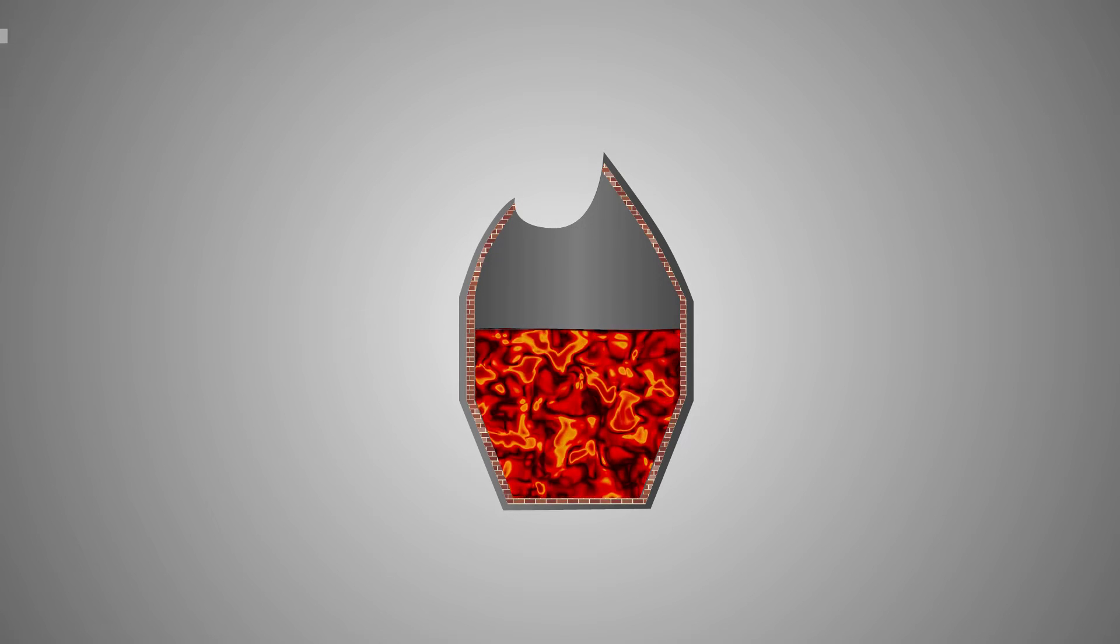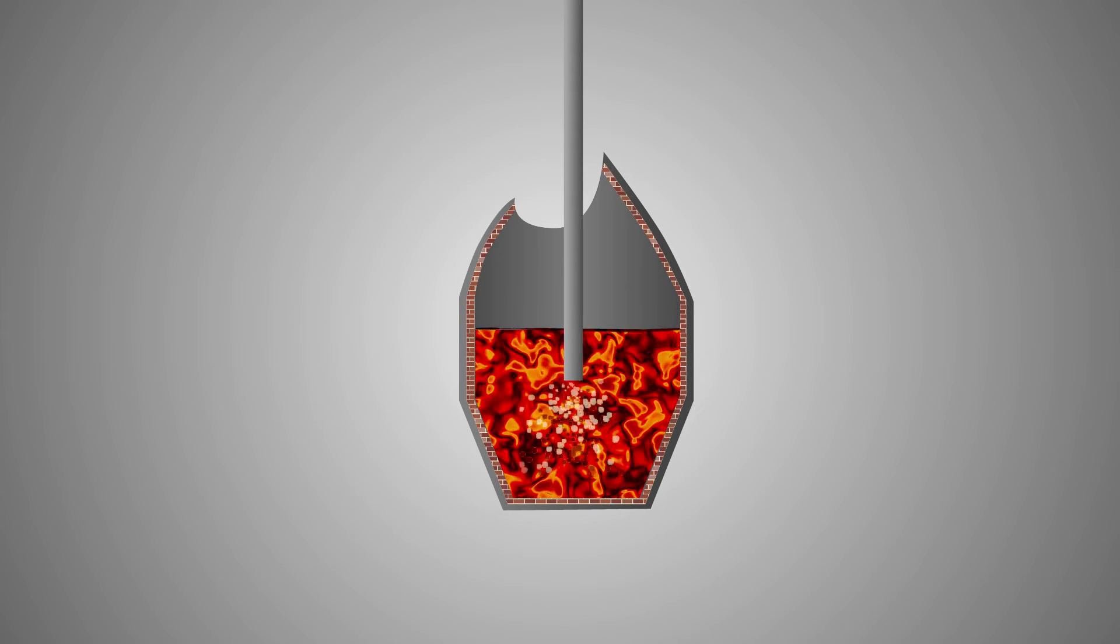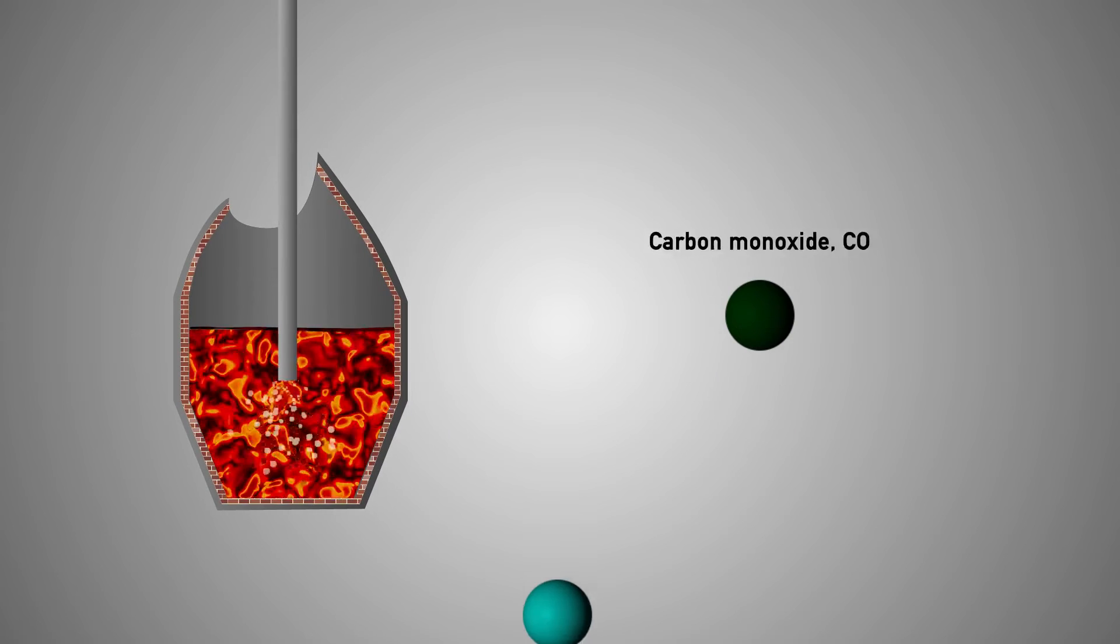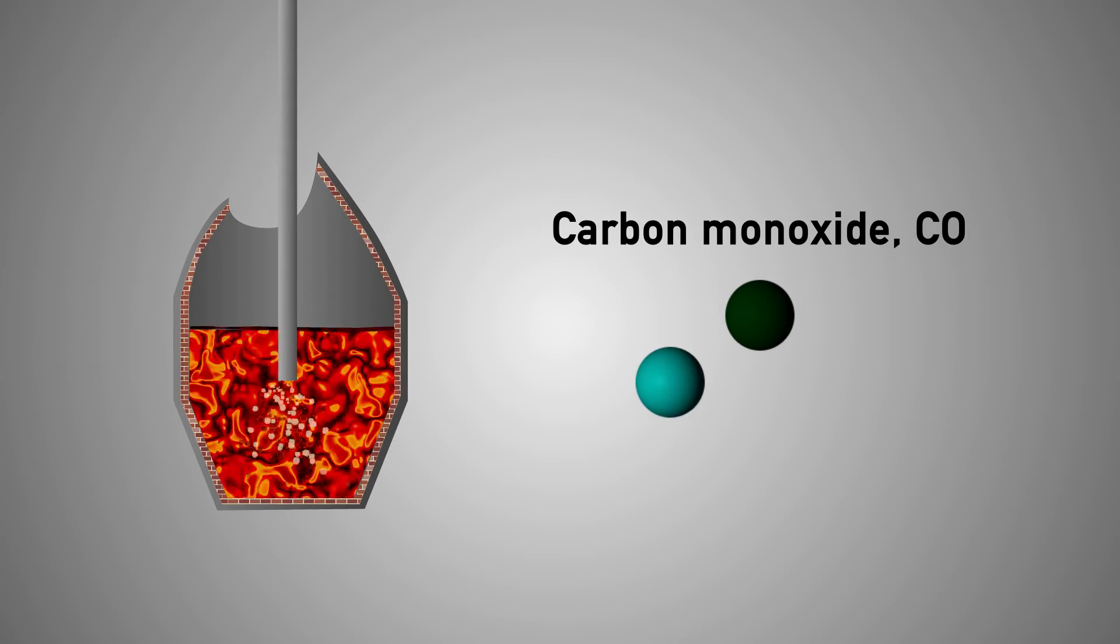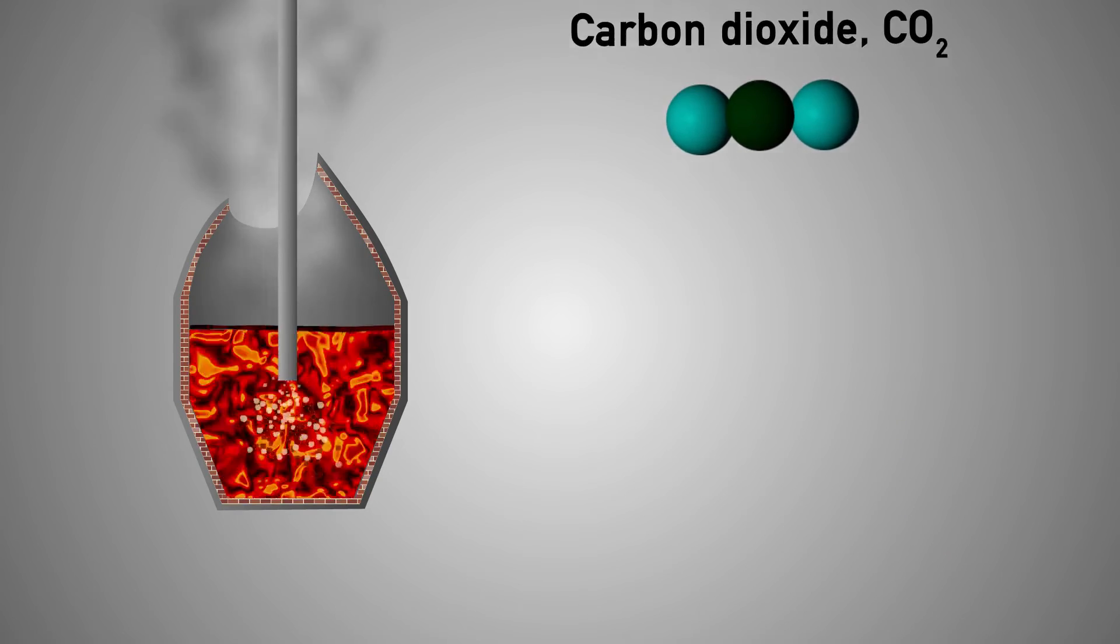Oxygen, together with quicklime (CaO), is injected at high pressure into the molten iron via a water-cooled lance. Oxygen combines with carbon in the molten iron to form carbon monoxide, which is further oxidized to carbon dioxide and escapes from the top of the furnace.